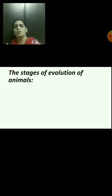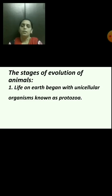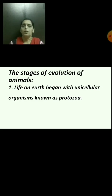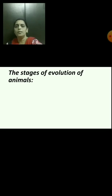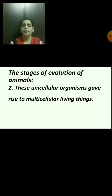Now, the stages of evolution of animals. Life on earth began with unicellular organisms known as protozoa — the first living things, which appeared in water. This unicellular organism then gave rise to multicellular living things. 'Uni' means one, and 'multi' means many or more than one.